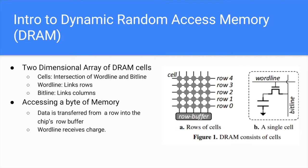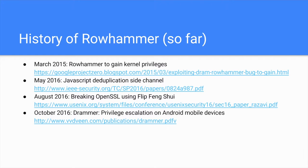I'll briefly discuss the history of Rowhammer to show the severity of this exploitation. In March of 2015, Google's Project Zero group found the first exploitations using Rowhammer, performing privilege escalations. Before this point, research had only theorized that exploitations were possible, but there was no working evidence. The exploitation was only limited to certain Intel chips and implemented at a low level.